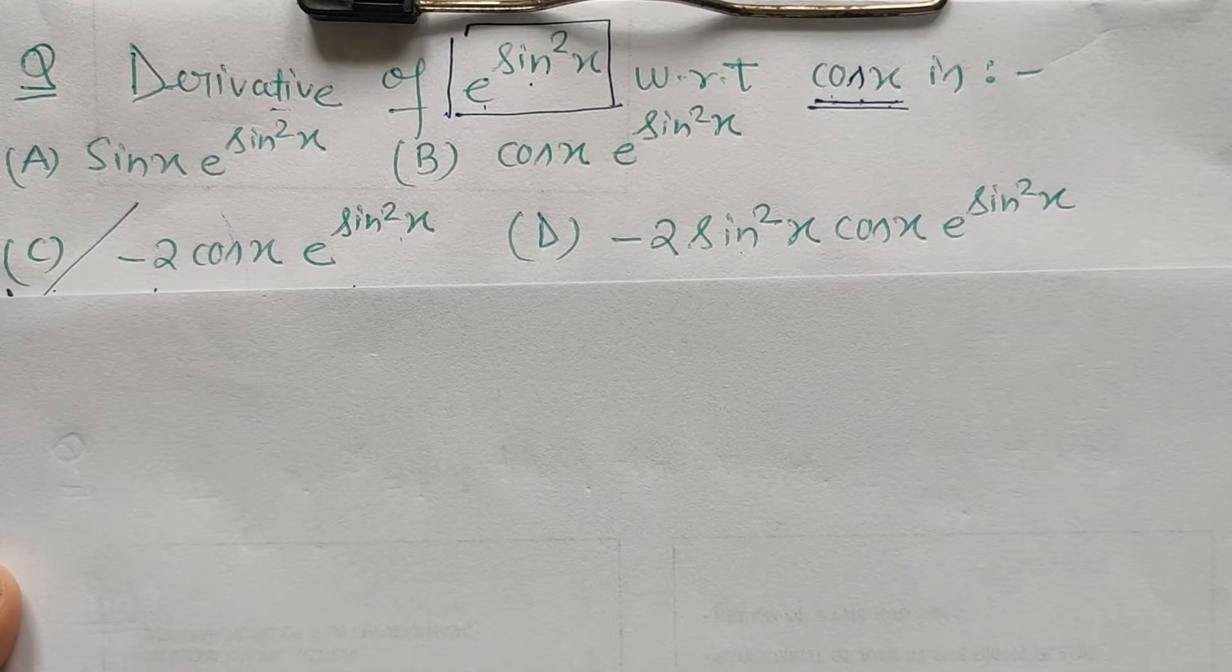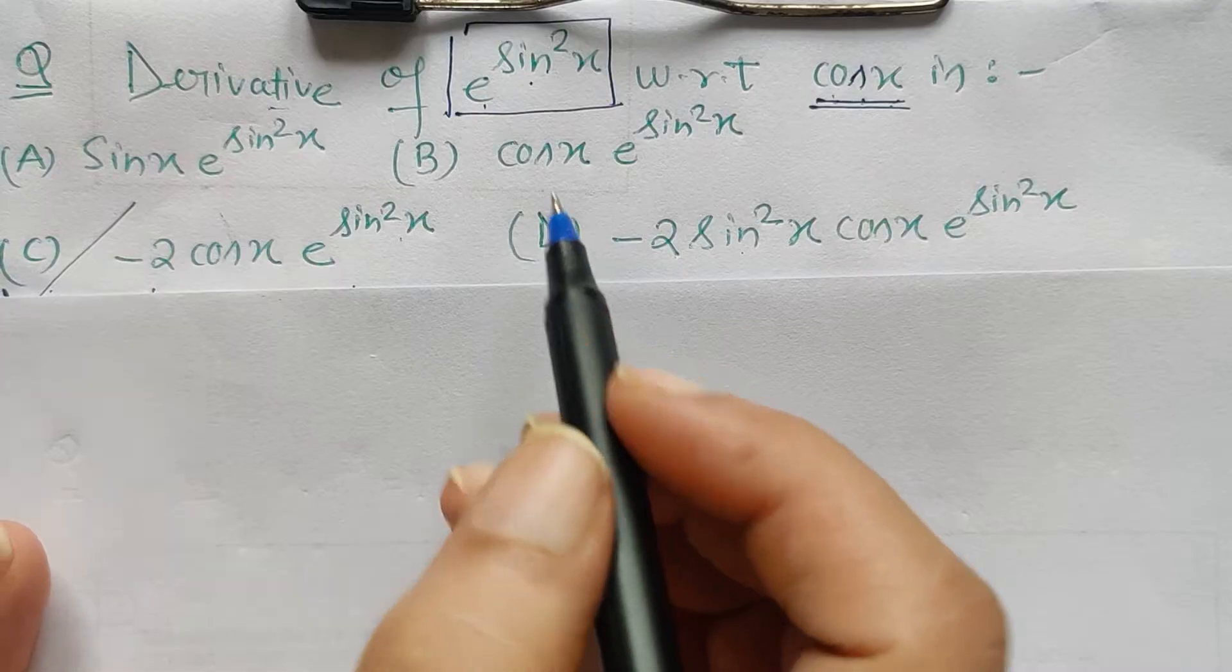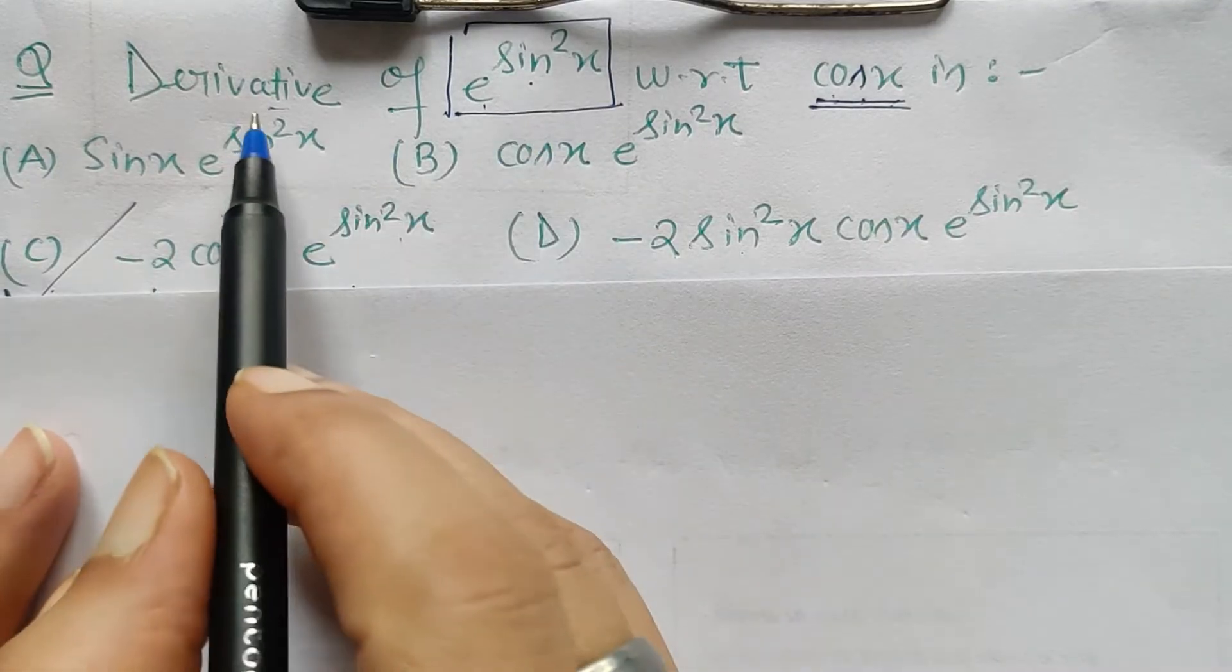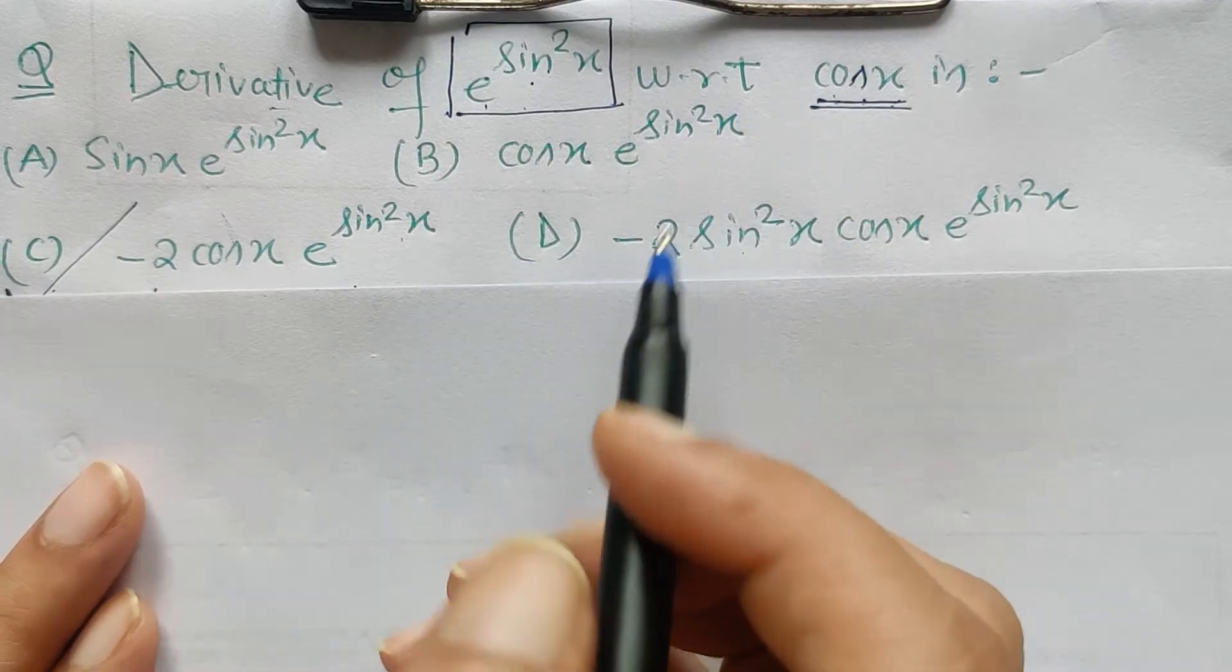Hello friends, I think many of you might not have been able to understand the previous method of solving this question - the derivative of e to the power sine square x with respect to cos x. This can also be solved in another manner.